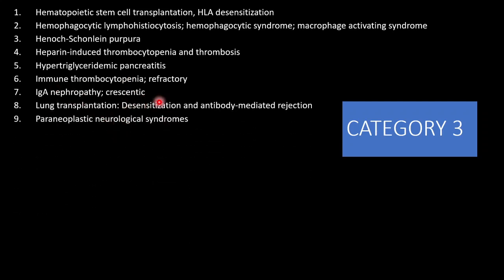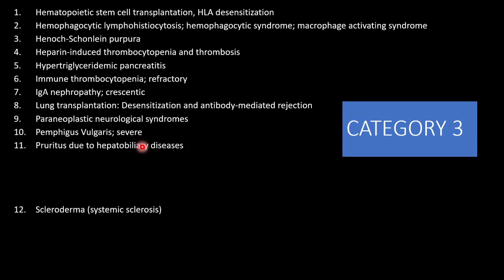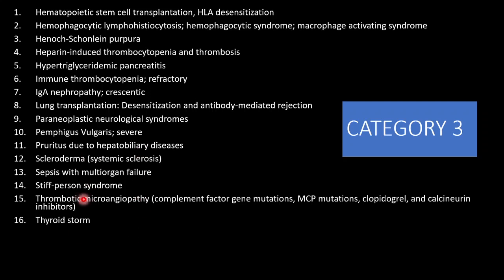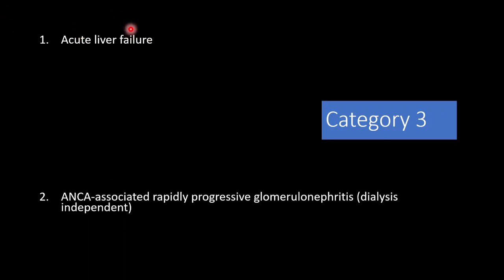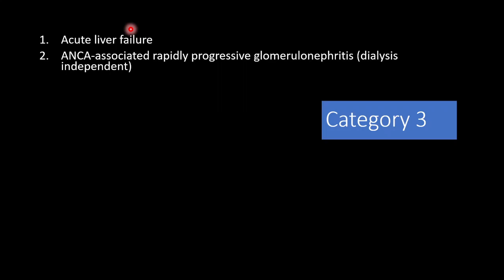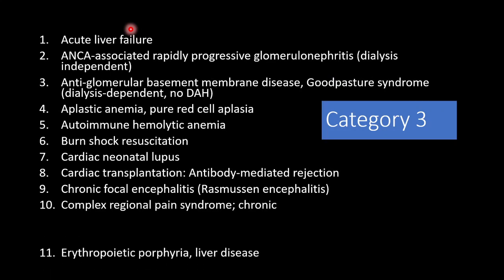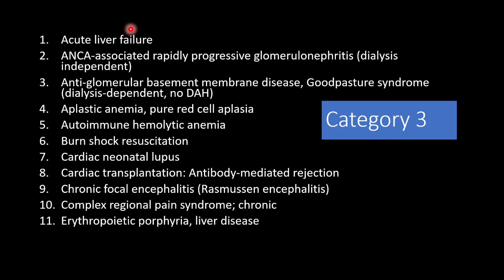Category 3 includes lung transplantation for desensitization, paraneoplastic syndromes, thyroid storm, toxic epidermal necrolysis, and the list is more lengthy — you can go through them one by one. Also acute liver failure — even in acute liver failure, plasmapheresis has a minimal role, but if the patient is not recovering with conservative management and MARS is not available, this can be considered. The list is very lengthy for Category 3.